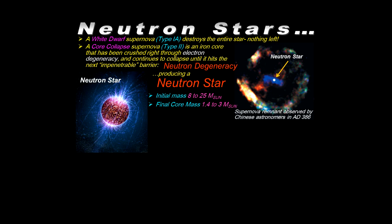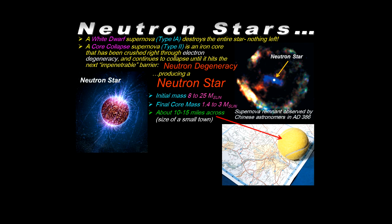The final core mass is in the range of 1.4 to 3 solar masses. Crushed down so much, the entire solar mass is reduced to an object about the size of a small city, 10 to 15 miles across. Here it is shown, a tennis ball on a map of the Washington, D.C. area.